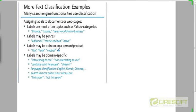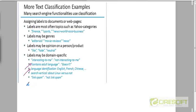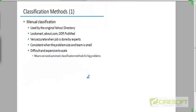You can classify reviews about a product into three classes: a neutral review, a positive review, and a negative review. You can categorize documents as having adult language or not — age-restricted versus unrestricted. You can have classes corresponding to different languages in which documents are written, or whether a document is spam or not. There are a variety of problems where classification is helpful.